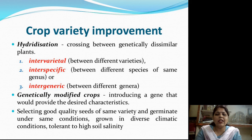After hybridization comes genetically modified crops. We first select the best, most favorable gene and then introduce that gene into the crop so that it can provide the desired characteristics.